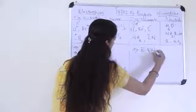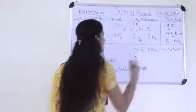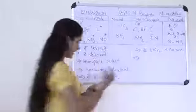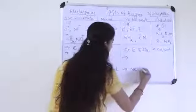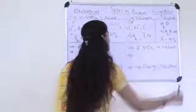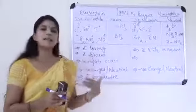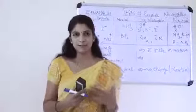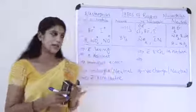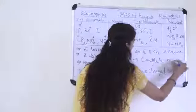Nucleophiles are electron-rich in nature. They are negative charge species, or otherwise neutral species. Unlike electrophiles which have incomplete octets, nucleophiles have a complete octet. They have complete octets with lone pair electrons available to donate.